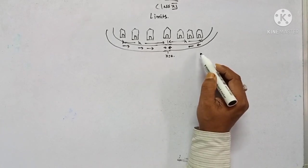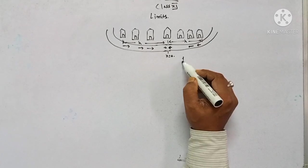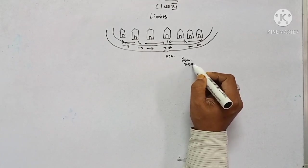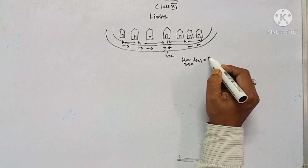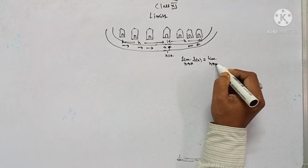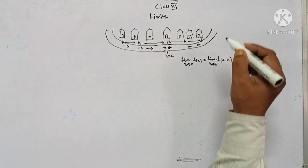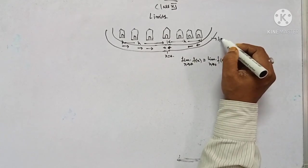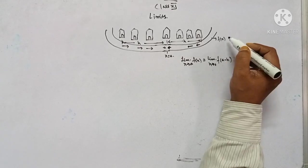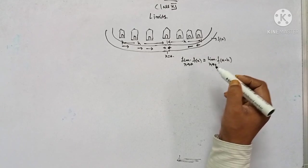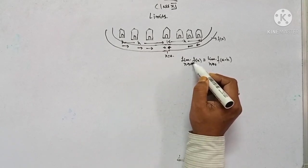All this can be written mathematically. When I am coming from the right side, that is limit x tends to a of f(x), that equals limit h tends to 0 of f(a + h). This road can be considered as a function f(x).